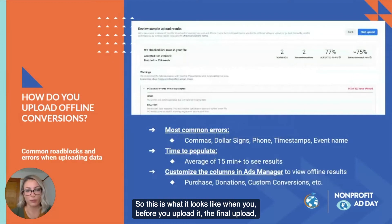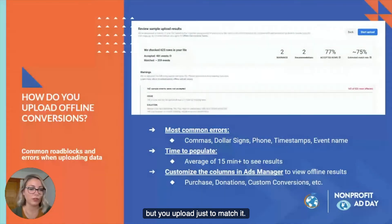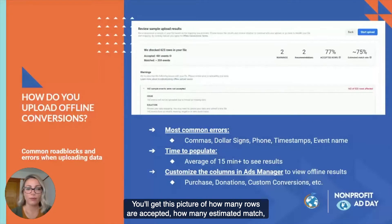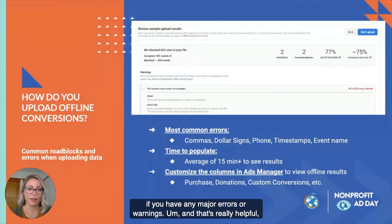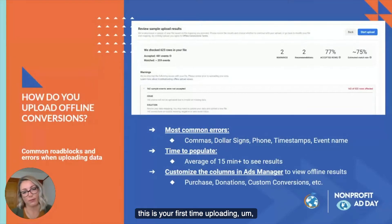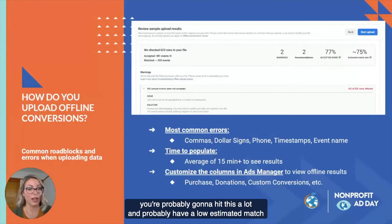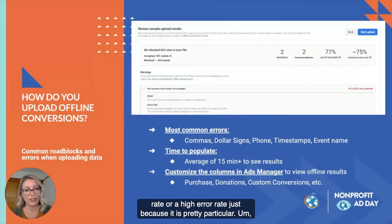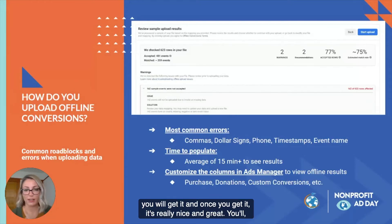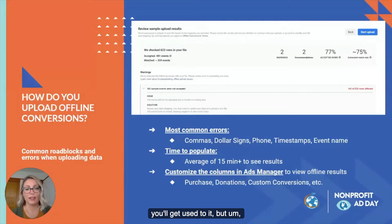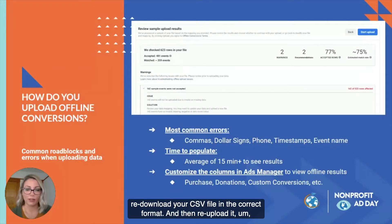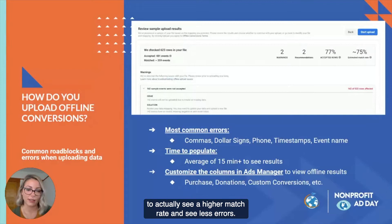Before you finalize the upload, you upload just to match it first, and you'll see how many rows are accepted, how many are estimated to match, and if you have any major errors or warnings. That's really helpful because you can hit the back button and make edits. If this is your first time uploading, you'll probably have a low estimated match rate or a high error rate because the formatting is quite particular. Don't get frustrated — once you get it, it's great. You may have to re-download your CSV in the correct format and re-upload to see a higher match rate and fewer errors.